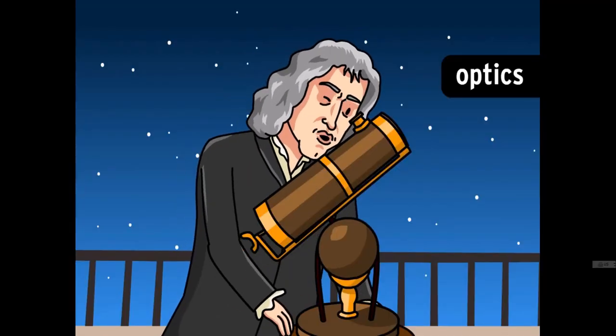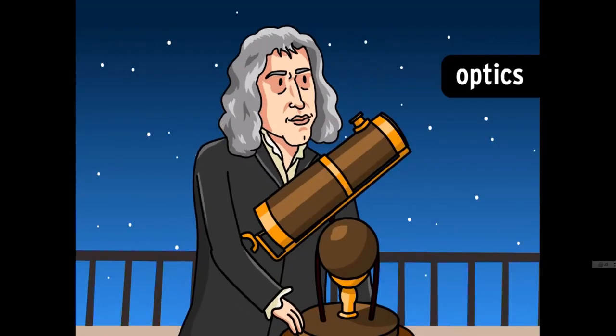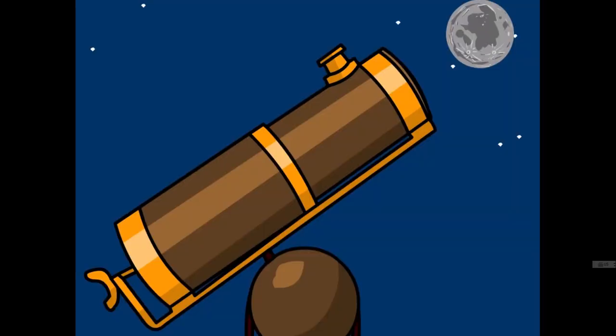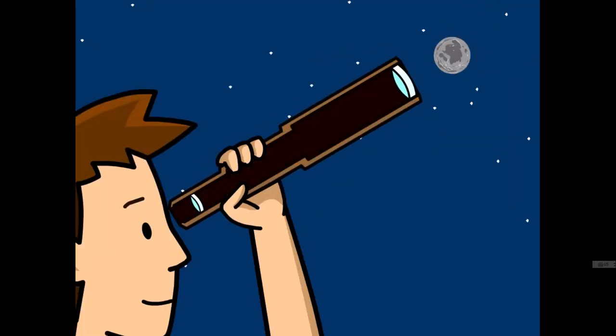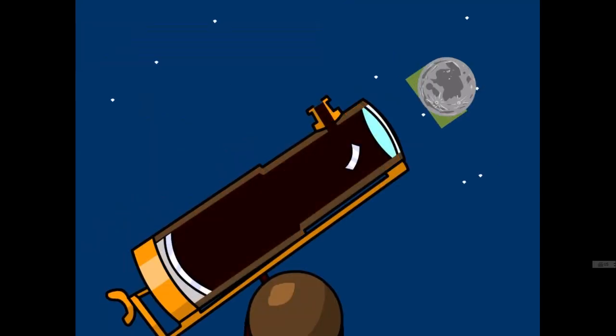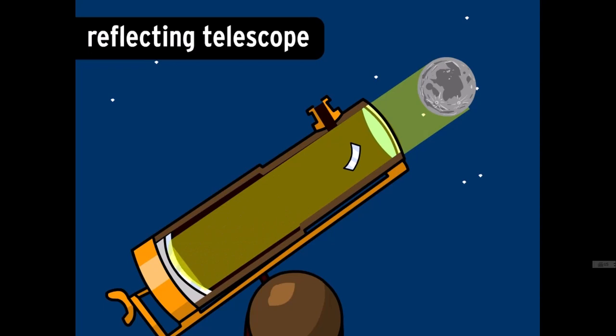And then there's Newton's work in optics, the branch of physics that deals with the properties of light. By refracting light through a prism, he discovered that white light is made up of a whole spectrum of colors, which gave him an idea for how to improve telescopes. Back then, refracting telescopes formed images by using lenses to bend light, but a lot of the colors got lost in the process. Newton's reflecting telescope avoided this problem. It used mirrors to reflect light, resulting in a much higher quality image.